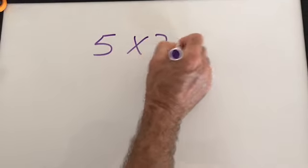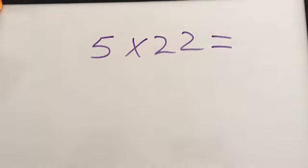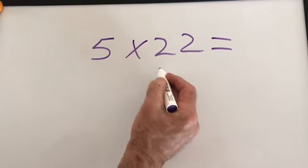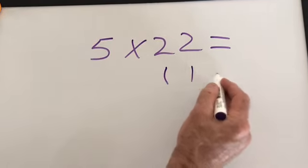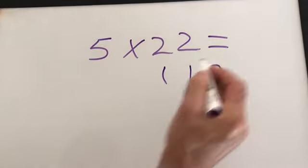Five times 22 equals. Half of two is one. Half of two is one. It's an even number. Put a zero on the end. Five times 48 equals. Half of four is two. Half of eight is four. Put a zero on the end.